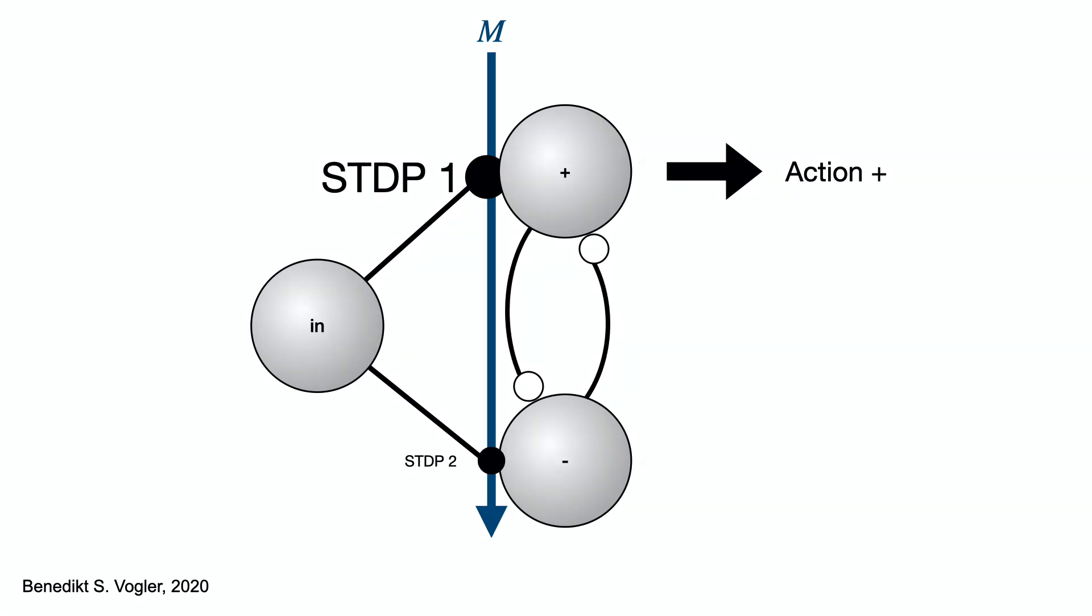So, we can add lateral inhibition to suppress the activity of low active neurons. It's similar to a softmax layer in artificial neural networks.